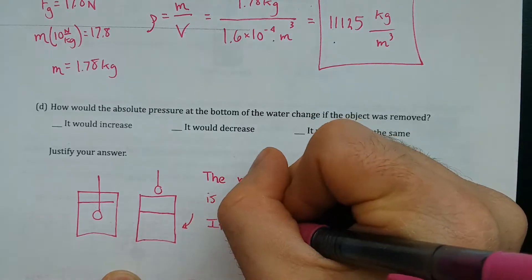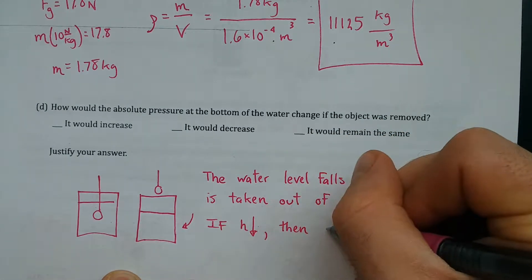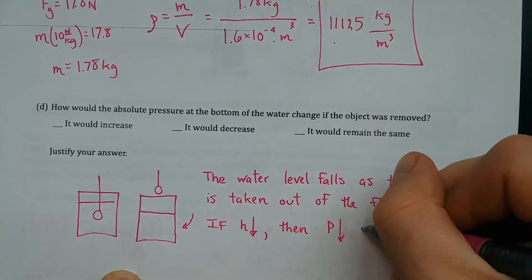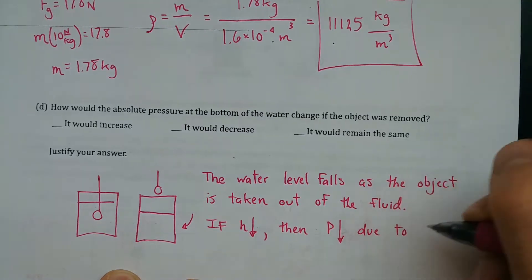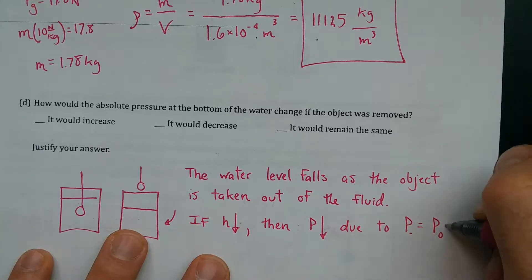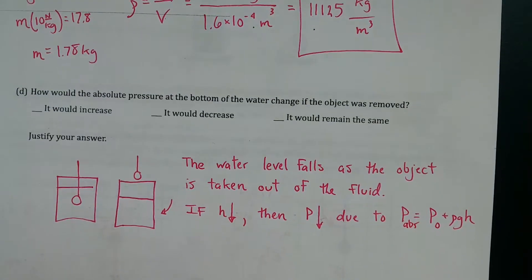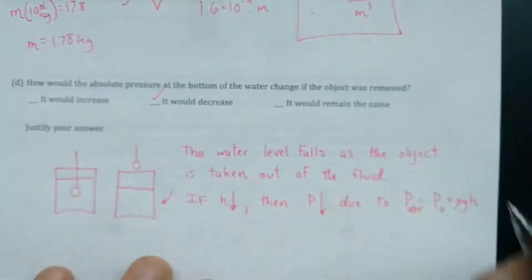And I could justify this by saying the water level falls as the object is taken out of the fluid. If depth goes down, then pressure goes down. p equals p0 plus rho g h. And I'll say absolute here. So it would decrease.